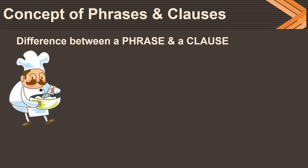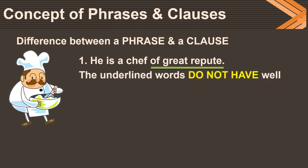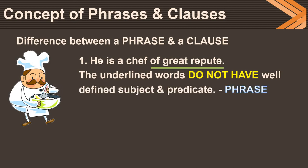Look at this picture and a sentence based on the picture: 'He is a chef of great repute.' Phrases and clauses are groups of words. Here I underline a group of words called 'of great repute.' What we notice in this group of words is that they do not have a well-defined subject and predicate, so they are called a phrase.